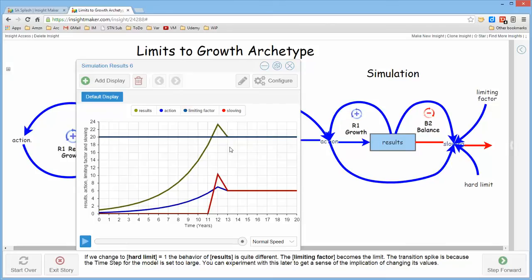This little spike is also the result of the simulation time step being too large. When the time step in a simulation is too large, what happens is the calculations miss some of the important transactions that happen in the relationships between the elements and therefore it didn't catch that it was at the limiting factor.